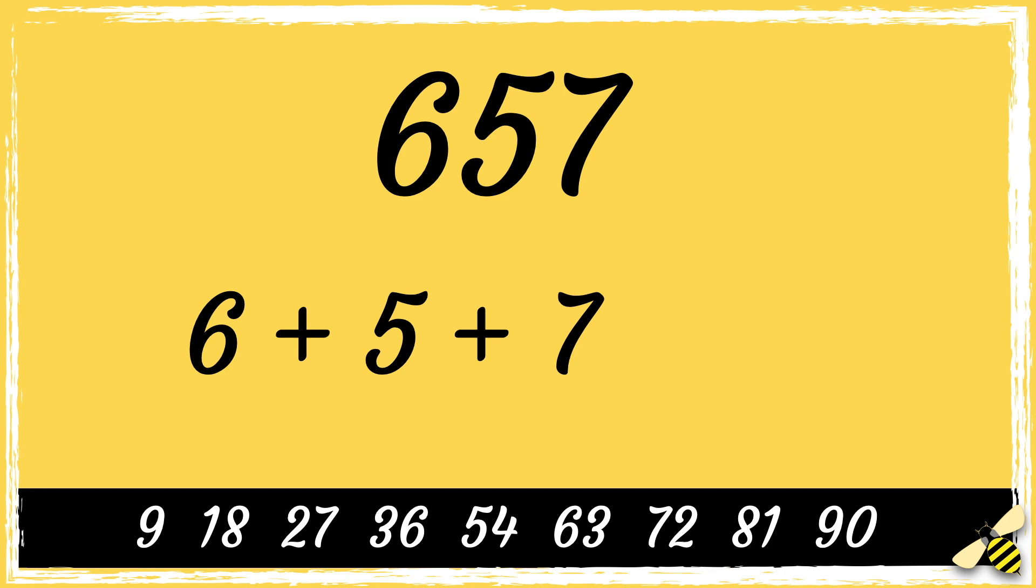So first, we add the digits. 6 add 5, add 7, equals 18. 18 is a multiple of 9. So that means that 657 is divisible by 9.